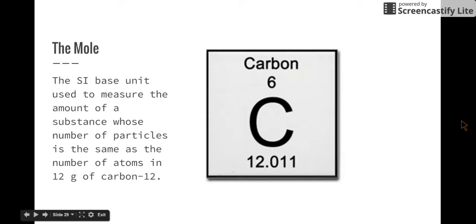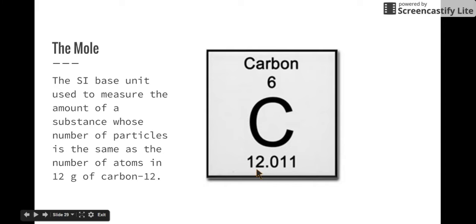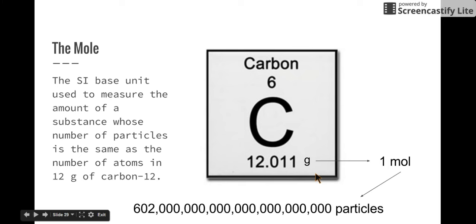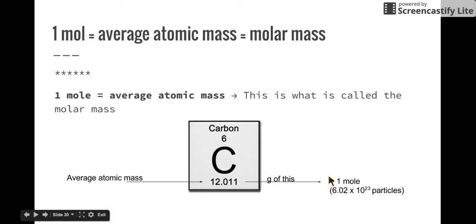Going back to our definition of what the mole is: it says the number of particles is the same as the number of atoms in 12 grams of carbon-12. If we had carbon-12, that's an atomic mass of 12, and if we had 12 grams of carbon-12, then we have one mole. And if we had one mole, that means we have 602 sextillion particles or atoms of carbon. So one mole is literally equal to the average atomic mass of an element on the periodic table. This is what we call the molar mass. Looking at carbon on the periodic table, if you take the average atomic mass and convert it directly into grams, that's one mole — the molar mass. So 12 grams of carbon is one mole, or 602 sextillion particles.